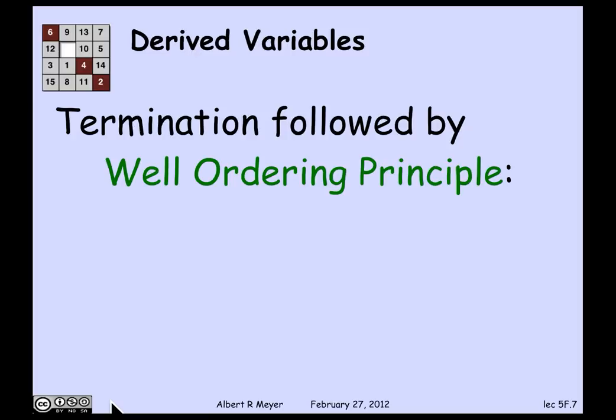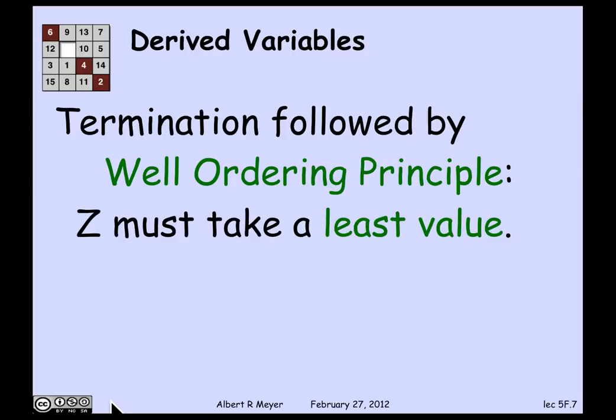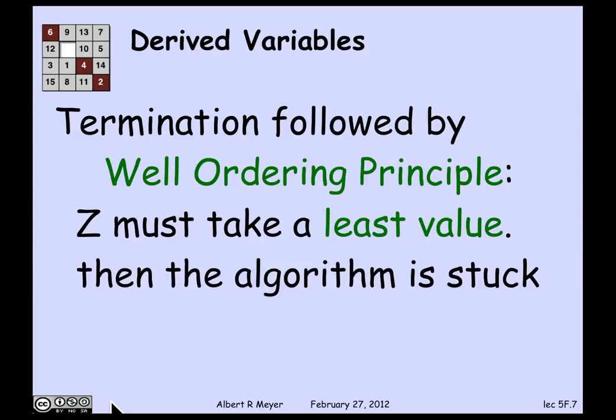That implies, by the well-ordering principle, that it will take a minimum value. What we know about the minimum value of a strictly decreasing variable is that the algorithm is stuck. Because once z has reached its minimum value, if the machine took another step, then it would get smaller. So it means that the algorithm has to terminate.